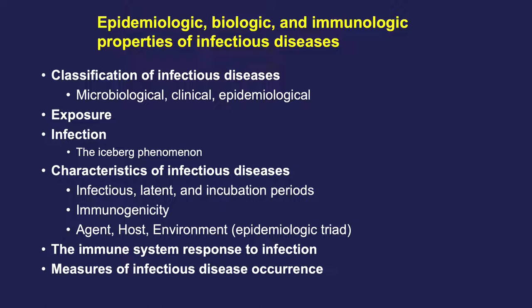In this part of the lecture, we'll cover the different ways of classifying infectious diseases and agents, what constitutes exposure to an infectious agent, the concept of infection, the characteristics of infectious diseases, the immune system response to infection, and measures of infectious disease occurrence. These are very big topics — we're covering the parts most useful from an epidemiological standpoint, just to introduce you to some key concepts.